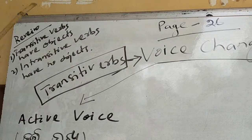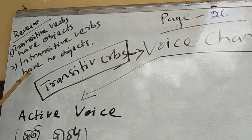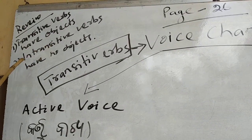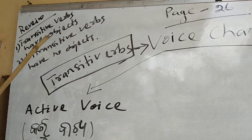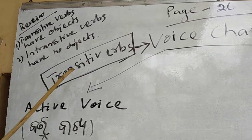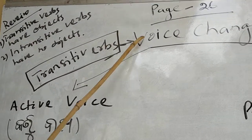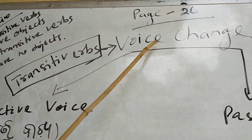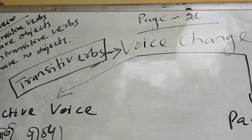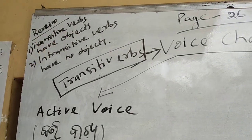You know what are transitive verbs and what are intransitive verbs. Transitive verbs have objects, but intransitive verbs have no objects. So voice change will only be done by the transitive verbs — those who have the objects.